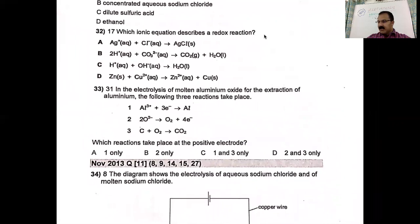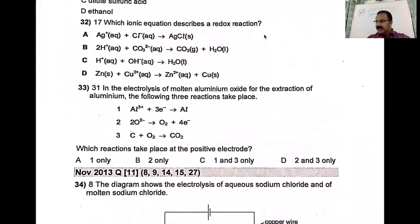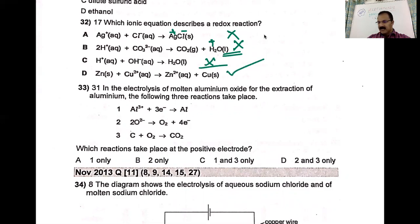Which ionic equation describes a redox reaction? Option A: Ag⁺ + Cl⁻ → AgCl — that's a precipitation reaction, not redox. Option B: H⁺ plus carbonate gives water and CO₂ — acid and carbonate reaction, a neutralization reaction, not redox. Option C: H⁺ + OH⁻ → H₂O — also a neutralization reaction, not redox. Option D: Zn + Cu²⁺ → Cu + Zn²⁺ — zinc was zero, becomes Zn²⁺ (oxidation); Cu²⁺ becomes Cu (reduction). So the answer is D.